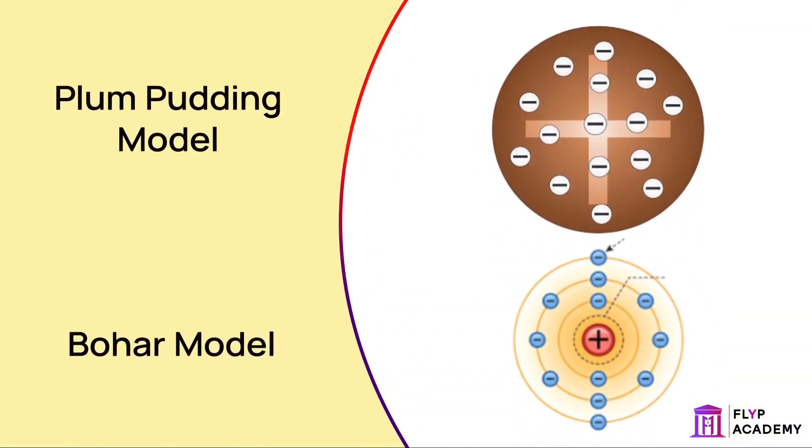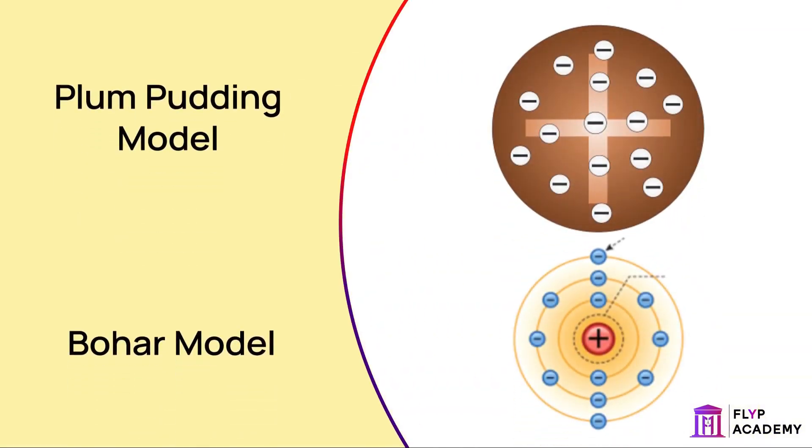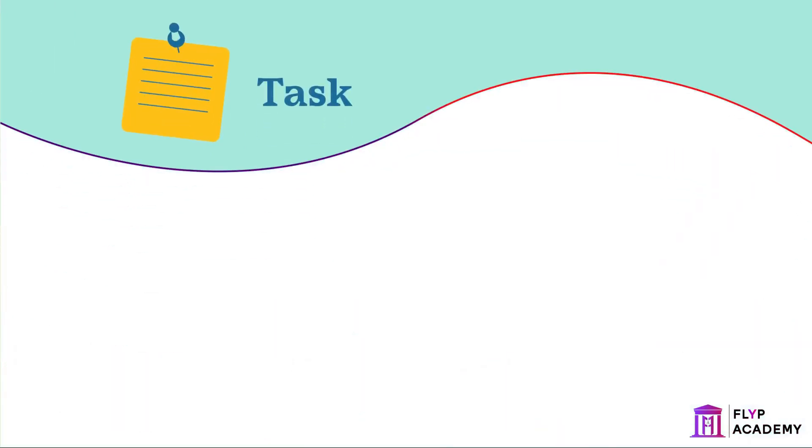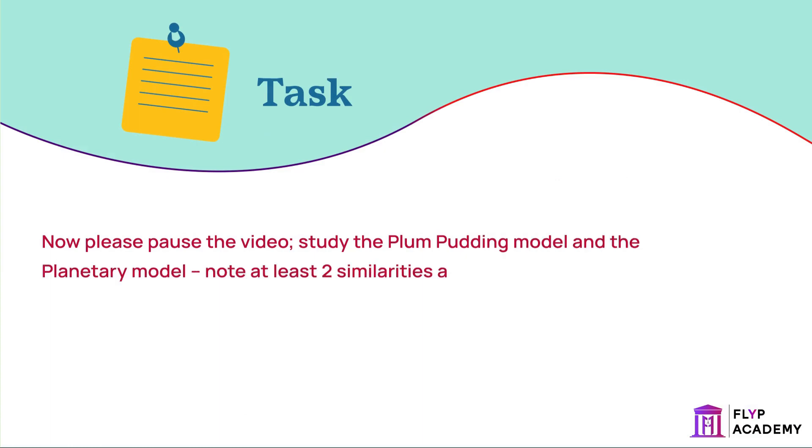Take a closer look at the plum pudding model and the Bohr model. Now please pause the video. Study the plum pudding model and the planetary model. Note at least two similarities and two differences between the models. Hint: the small dots in the plum pudding show the electrons.